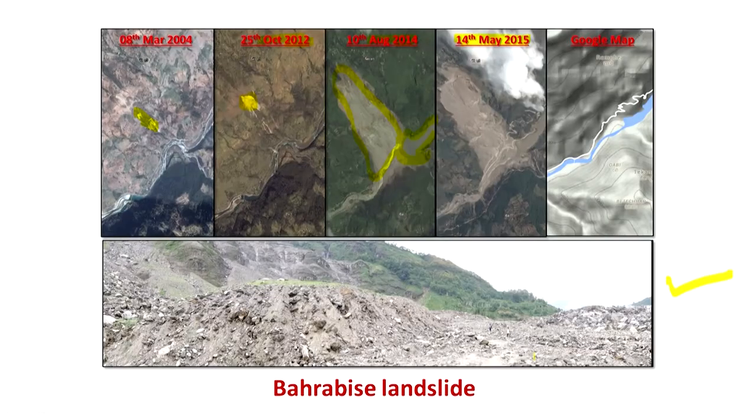This landslide started with a small slope movement, grew quite large induced by rain, and after the earthquake it enlarged further, also damaging and damming the river. Just to give you an idea of how big this landslide was — a human is standing here — you can see it was a huge landslide, and the road going to Barabisi village was completely destroyed, creating a big accessibility problem.